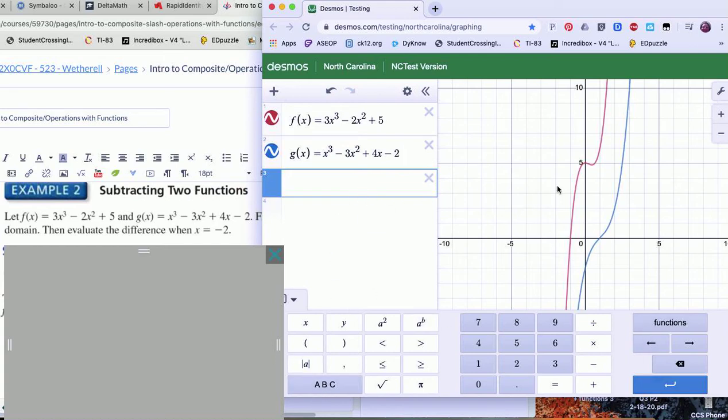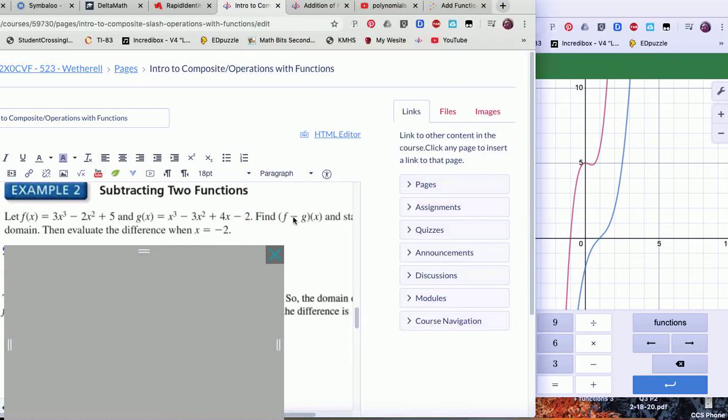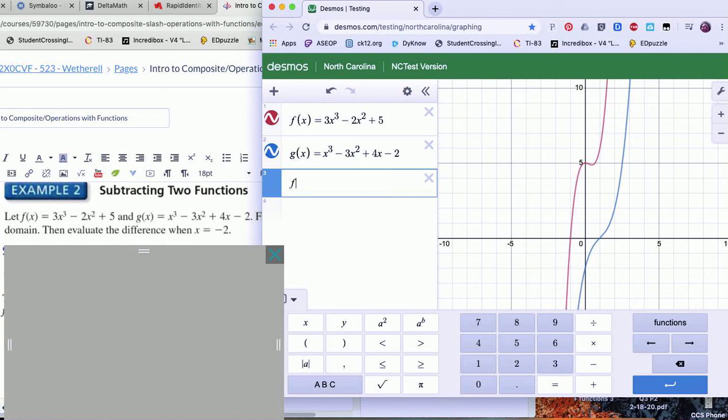Looking at this so far, you can see your two functions in red and blue. Now I'm going to make sure it is in the right order. It says f minus g, so I need to make sure I put my f(x) first and subtract my g(x). Looking at the graph here in green.